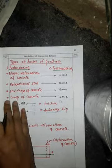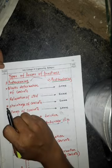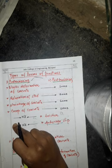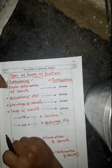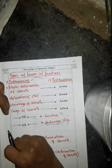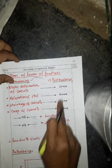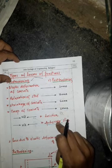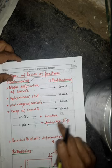There are different types of losses in prestressed concrete, and they are classified based on the system of pre-stressing. There are two important systems: pre-tensioning and post-tensioning. In pre-tensioning, there are four types of losses: elastic deformation of concrete, relaxation of steel, shrinkage of concrete, and creep of concrete. In post-tensioning, these same four losses apply, plus two additional ones: loss due to friction and loss due to anchorage slip.